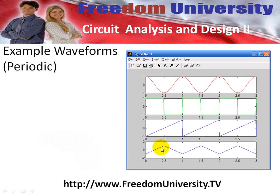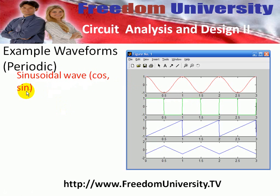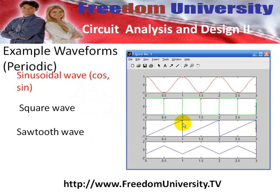Let's look at some example waveforms. We'll start off with some periodic signals. Here's the familiar sinusoidal wave, either a sine or a cosine. We denote these in red as the basic waveforms from which we can create more complicated waveforms — the sinusoidal wave, the unit step, and the exponential, which we'll see in the next couple of slides. Here's our square wave, where we turn on and off periodically, and our sawtooth wave, which can be used as a sweep in an oscilloscope for example. And then we have a triangular wave.